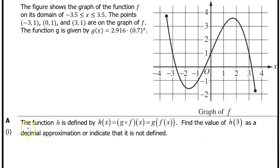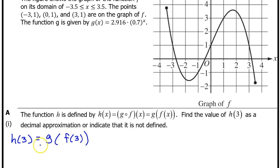A Part 1. The function h is defined by h of x equals g of f of x. This notation means the same as this. Find the value of h at 3 as a decimal approximation or indicate that it is not defined. h at 3 means plug in 3 for x right here. So h at 3 is equal to g at f at 3. But f at 3 is 1. We can see that right on the graph.